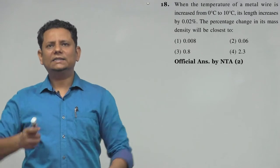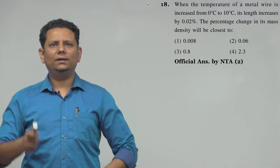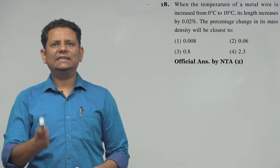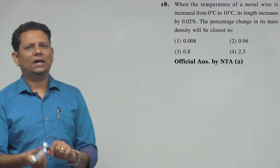Next question. The question says when the temperature of a metal wire is increased from 0 degrees to 10 degrees centigrade, its length increases by 0.02%. The percentage change in mass density will be closest to, and four options are given.